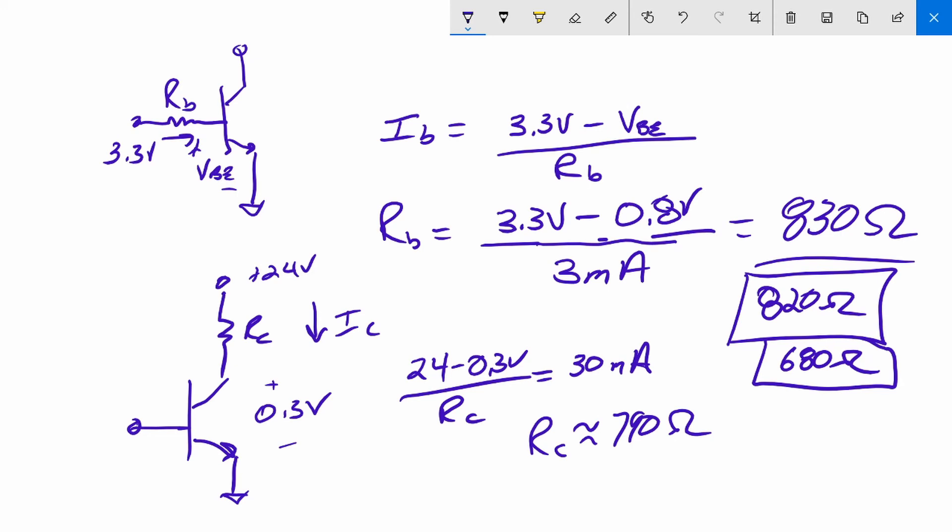So we could go to 820 ohms to keep the values the same. We could also go to 680 ohms. We could probably go up to one kilo ohm on that collector resistor.